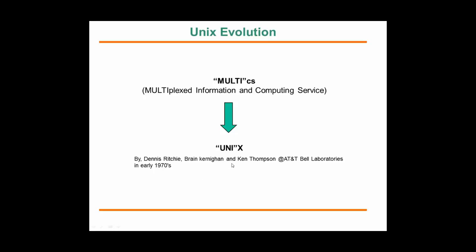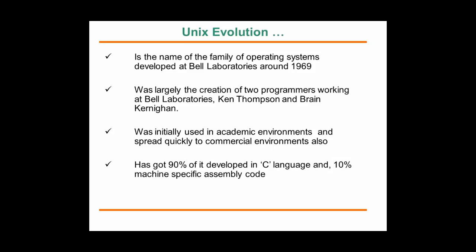Their initial goal was to write an operating system that concentrated on only one thing — response time. That's why they named it UNIX, with the prefix 'uni' meaning single. Once they developed it, they kept the source code open. Various industry leaders of that time — SCO UNIX, HP, Solaris, IBM — took the base source code, added their own features, and started releasing their own commercial versions into the market.